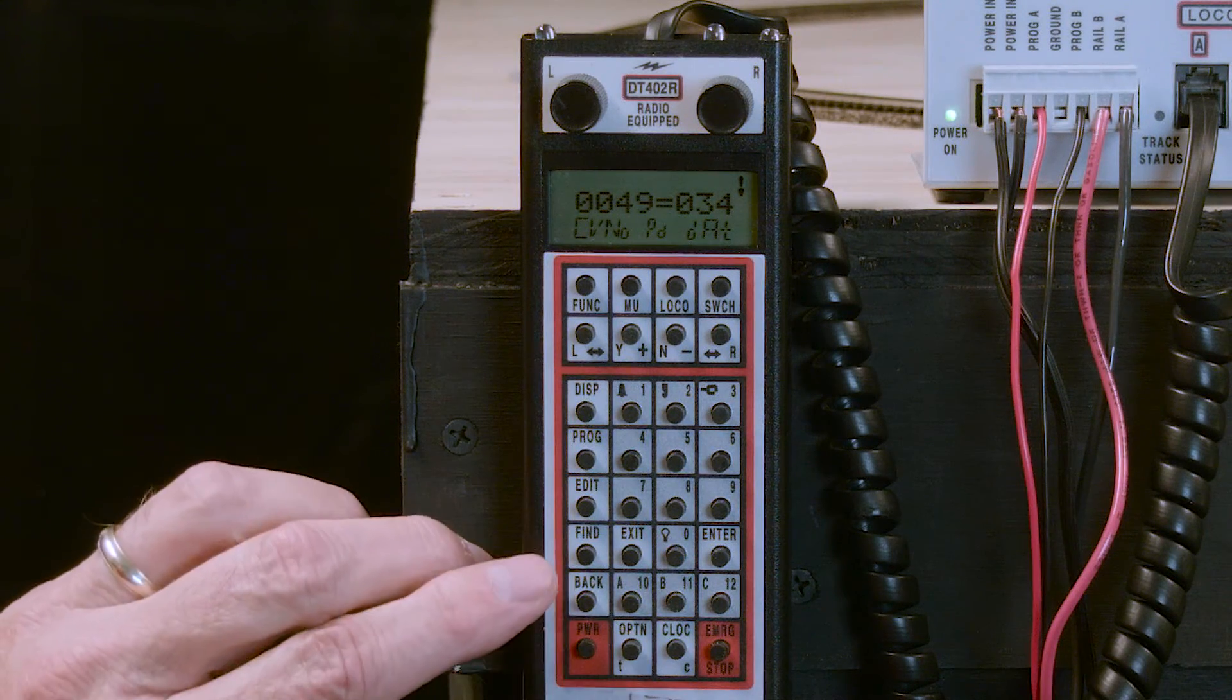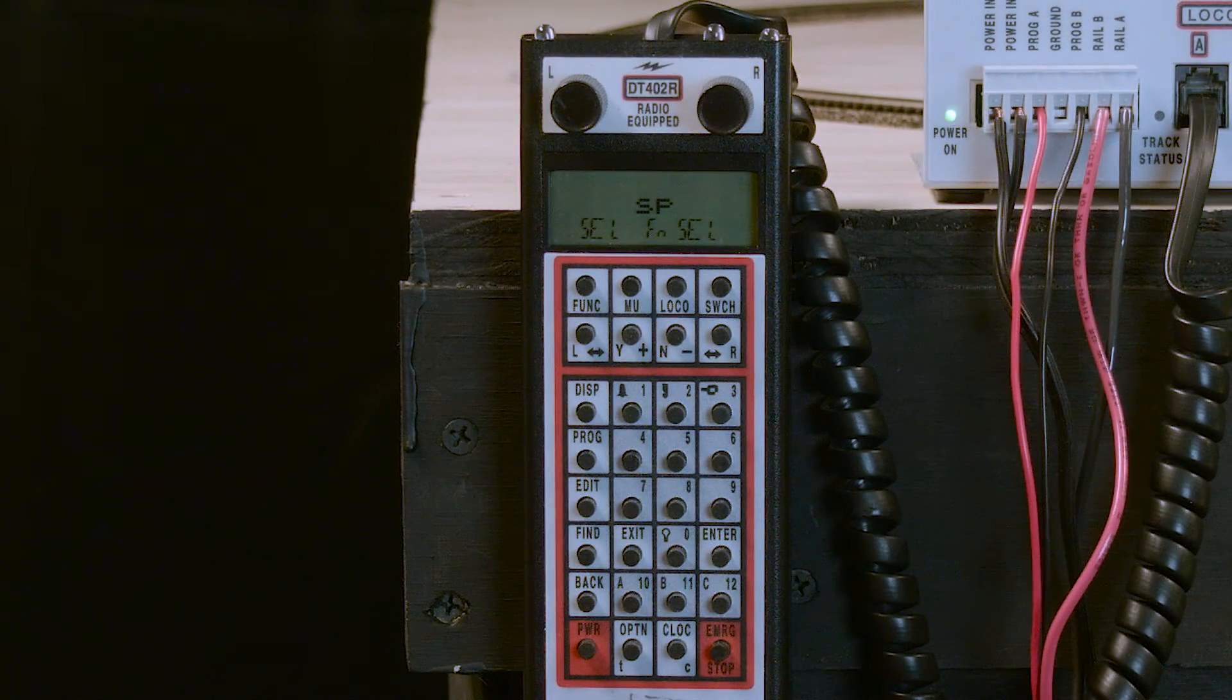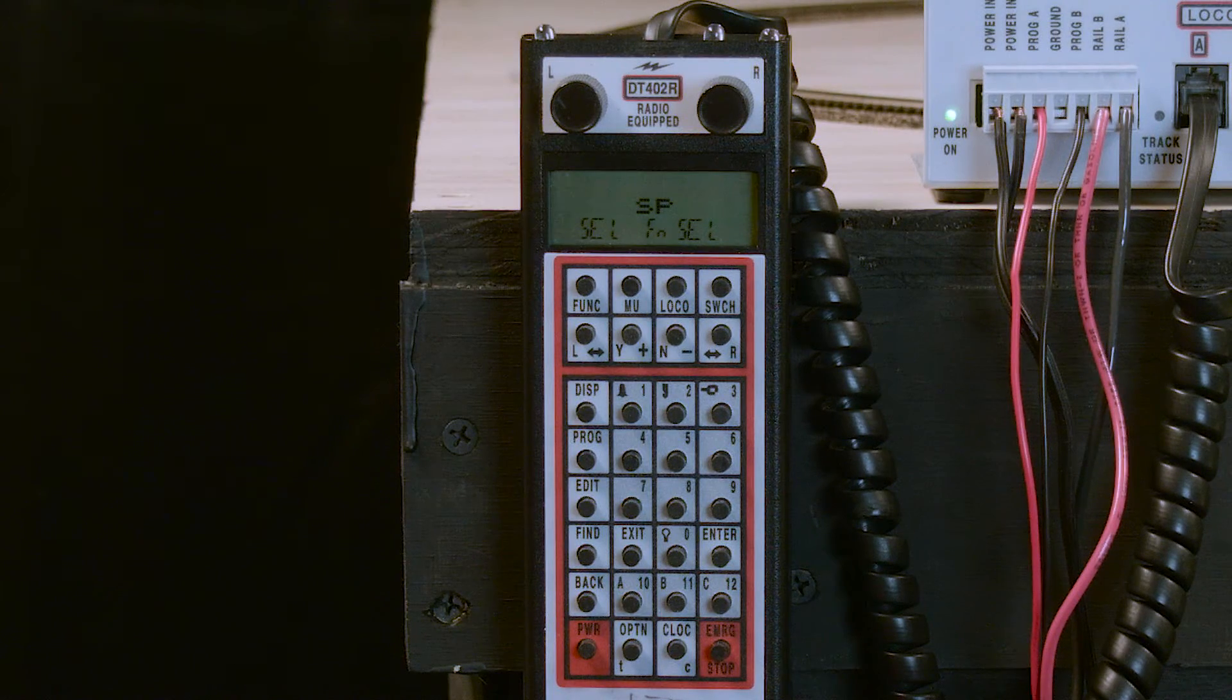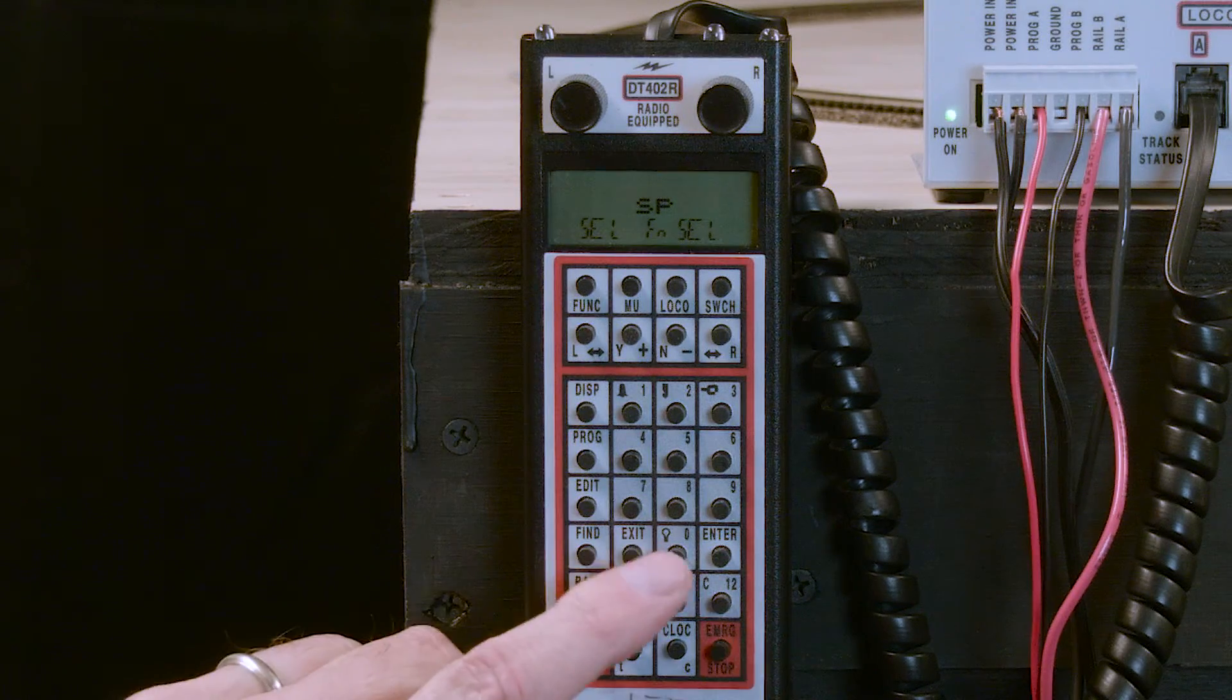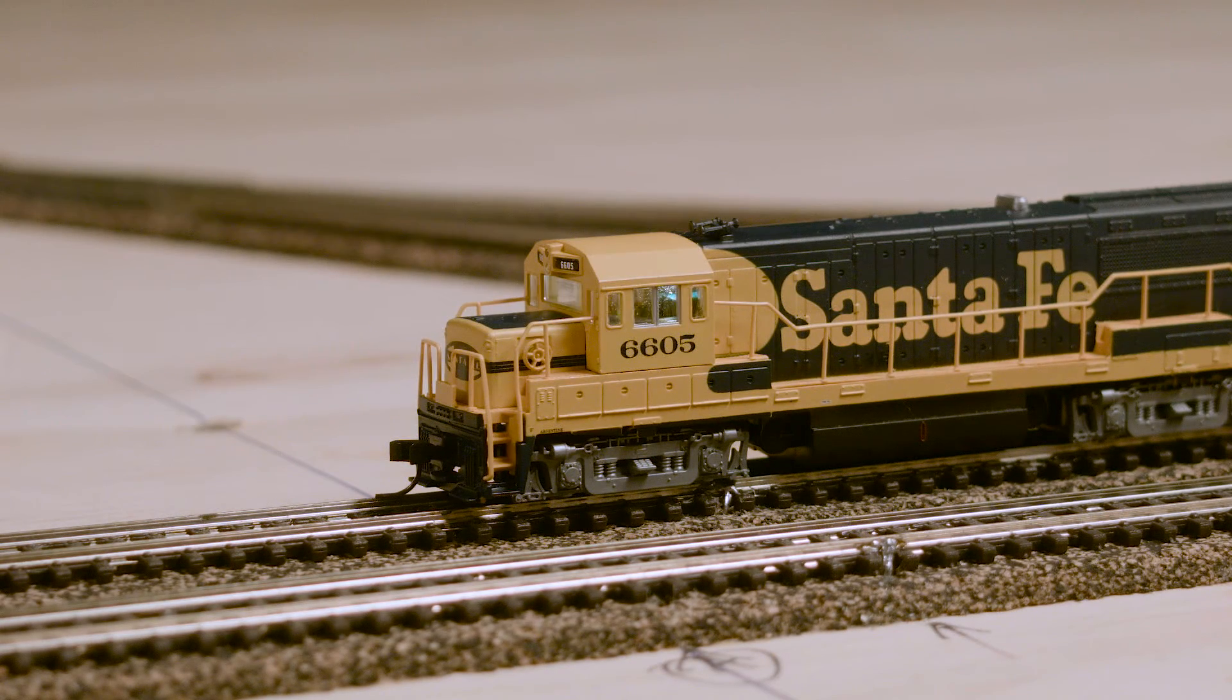We then press exit to get out of program mode. Put the locomotive on the main line and test it to see if it'll run on address 135 as it should. And we press the zero key to turn the headlight on and make sure that it works as a Mars light as we want it to in this case.